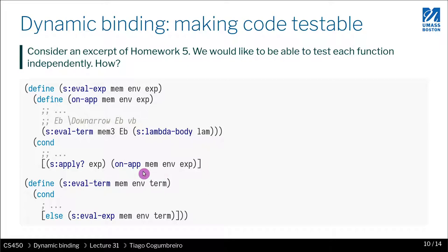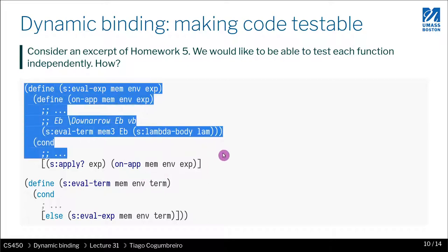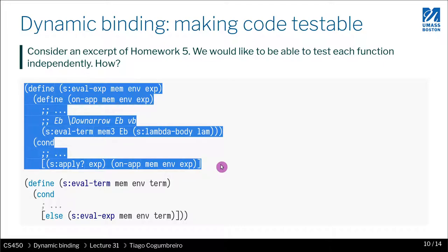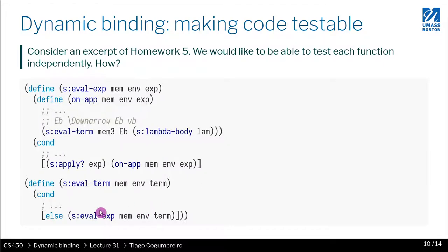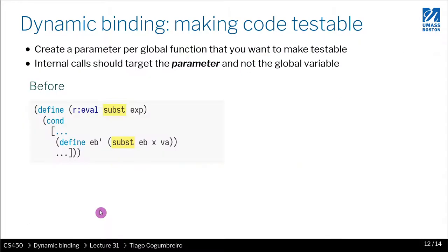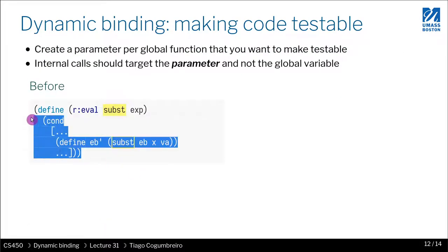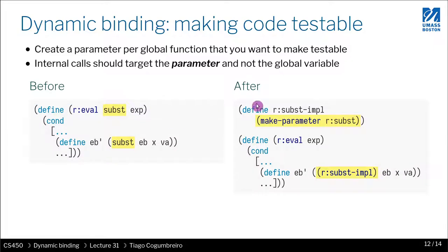So wouldn't it be nice to have the best of both worlds? To have an interface such as in homework 5, but with the added benefit of being able to test substitution and re-evaluation separately. That would be great. And in fact, you can do that with the notion of dynamic binding.